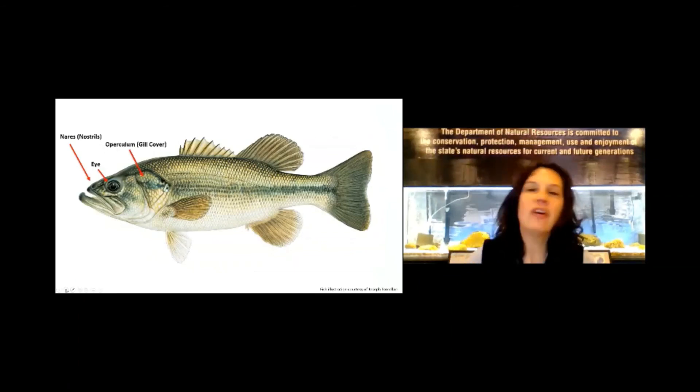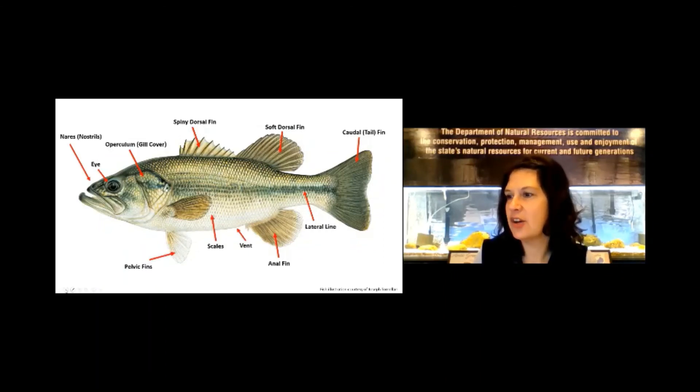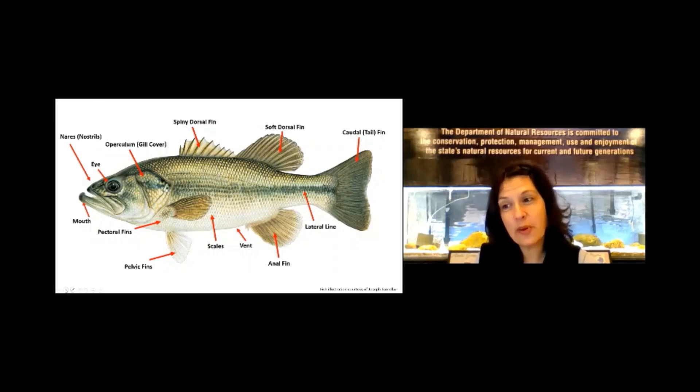Gill cover. I forgot that. That's just the cover that goes across the gills to protect them. They're fairly fragile. Got the caudal fin, lateral line, anal fin, vent, scales, pelvic fins, pectoral. We got it all. Hey, I think we did pretty good on identifying the different parts of a fish and what they do.